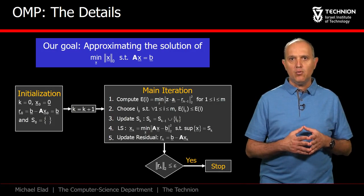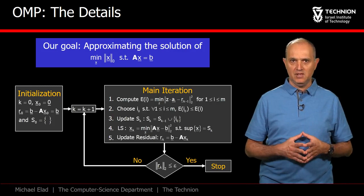If the obtained residual is small enough, we may choose to stop the algorithm. Otherwise we increase k by 1 and proceed.